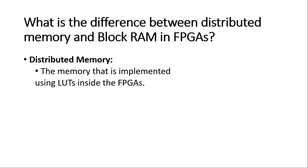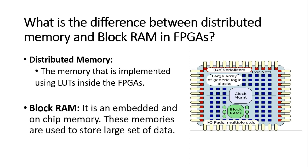Now let us discuss the second type of memory, called block RAM. A block RAM is an embedded and on-chip memory. In very simple words, it is a dedicated memory implemented inside the FPGAs. These memories are available in chunks, in blocks. Usually these blocks are available in a size of 18 kilobits or 36 kilobits, and these memories are used to store large sets of data.